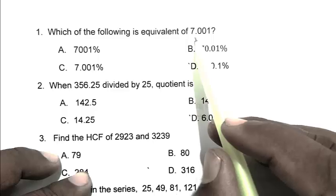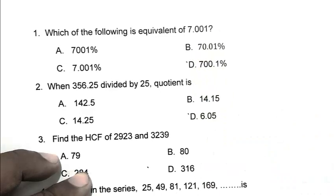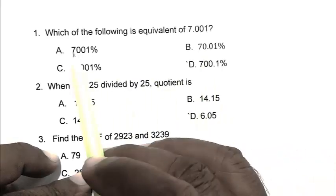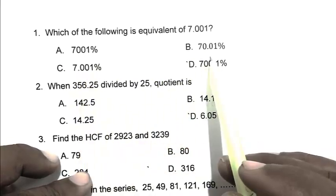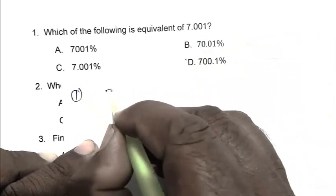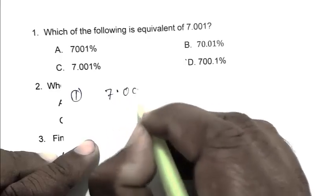Question number one: which of the following is equivalent of 7.001? If we closely watch the answer, we find that all are in percentage. So we have to convert this number to percentage. First, we convert this number to fraction: 7.001 by 1000.